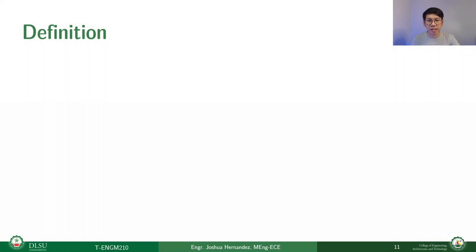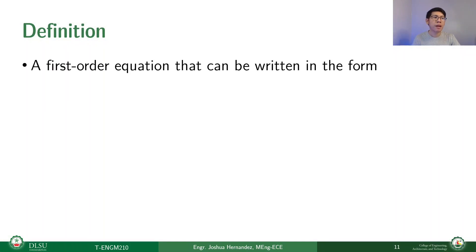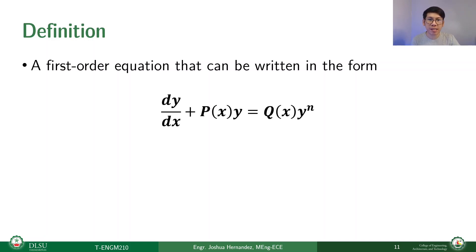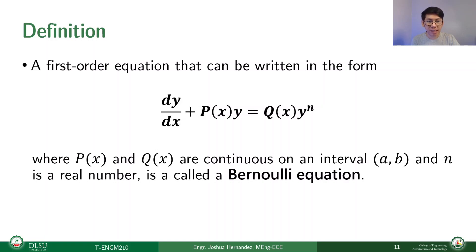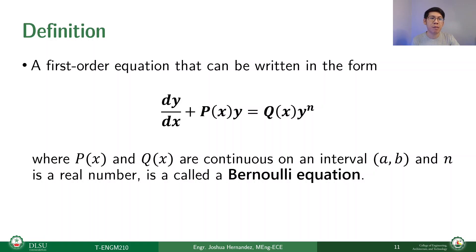All right. Let us define what a Bernoulli equation is. A Bernoulli equation is a first-order equation that can be written in the form dy/dx + P(x)y = Q(x)y^n, where P(x) and Q(x) are continuous on an interval [a, b], and n is a real number. This equation was proposed for solution by James Bernoulli in 1695 and was solved by his brother John Bernoulli — just two of eight mathematicians in the Bernoulli family.